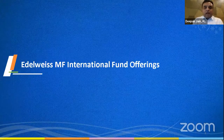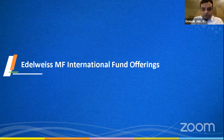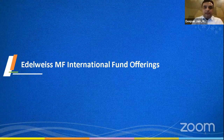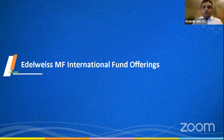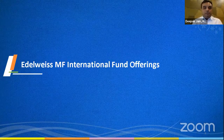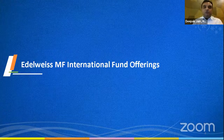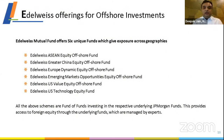Now I'll talk about some of our international offerings. We have a partnership with JP Morgan Investments. JP Morgan was doing business in India until about 2016, and Edelweiss AMC bought over their schemes in December 2016. We've been offering these products as a continuation of what JP Morgan was doing. Through these funds we can provide access to almost 85 percent of global equities. We currently offer six schemes.